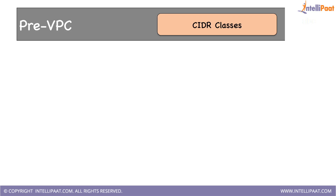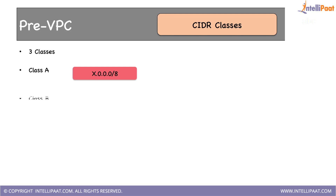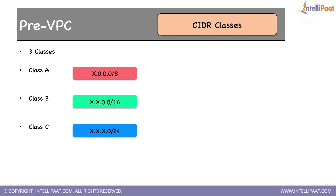CIDR classes: CIDRs were represented in three classes — note I said 'were' because they are not used anymore. These classes were used in old days; currently we use Variable Length Subnet Masks, or VLSMs — which is what we've been using throughout this discussion. In earlier days there were three classes: Class A with /8 network address, Class B with /16 network address, and Class C with /24 network address. Remember, these are not used anymore — always use VLSMs.